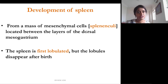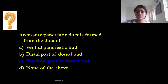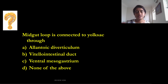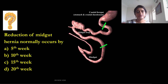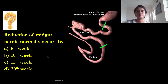The spleen is formed from a mass of mesenchymal cells located between the layers of the dorsal mesogastrium, called the splenunculi. The spleen is first lobulated but the lobules disappear after birth. Regarding the midgut loop: it is connected to the yolk sac through the vitelline intestinal duct. The midgut loop comes out of the abdominal cavity because there is insufficient space, and as the fetus grows, by around the 10th week, this physiological umbilical hernia returns to the abdominal cavity to occupy its normal position.